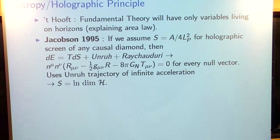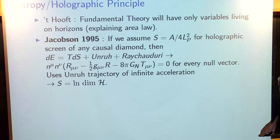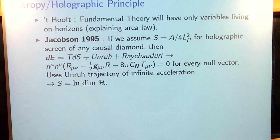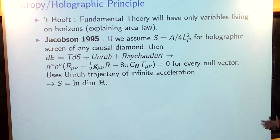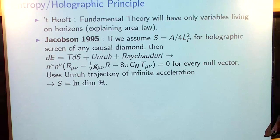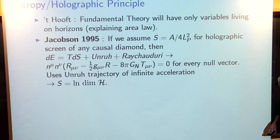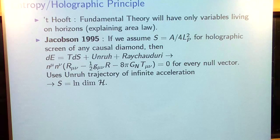What he said is that if you take the first law of thermodynamics and combine it with the observations of Unruh about acceleration radiation and the Raychaudhuri equation — which is just a general equation in geometry that tells you how areas change depending on the curvature — you can derive almost the Einstein equations just from those principles. What you get is not quite the Einstein equations; it's the Einstein equations dotted into any null vector at any point in space-time. If you use covariant conservation, you can see that the one thing you're missing is a cosmological constant.